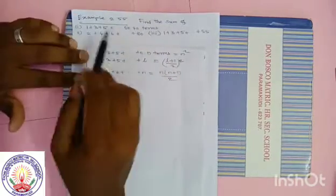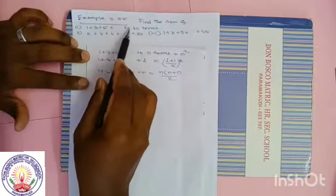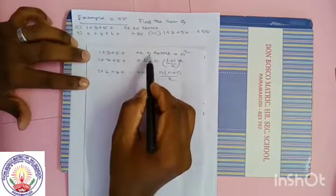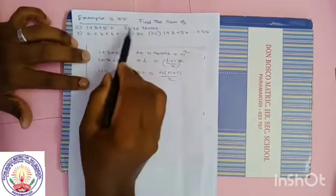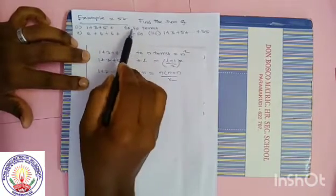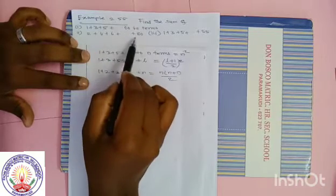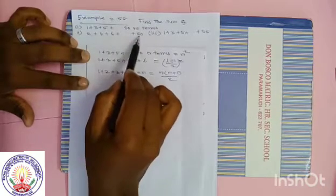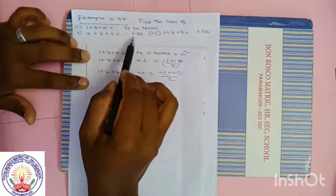Now look at problem number 1: 1, 3, 5 dot dot dot to 40 terms. That means the first model — formula is n square. Here n is equal to 40. Second question: these are the even numbers. So how to solve even numbers? We will discuss. The third one: 1, 3, 5 dot dot dot plus 55 — here plus 55 means L is given.